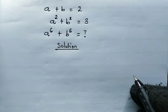We're given that a plus b equals 2, a squared plus b squared equals 3, and here we're going to evaluate a to the power of 6 plus b to the power of 6.